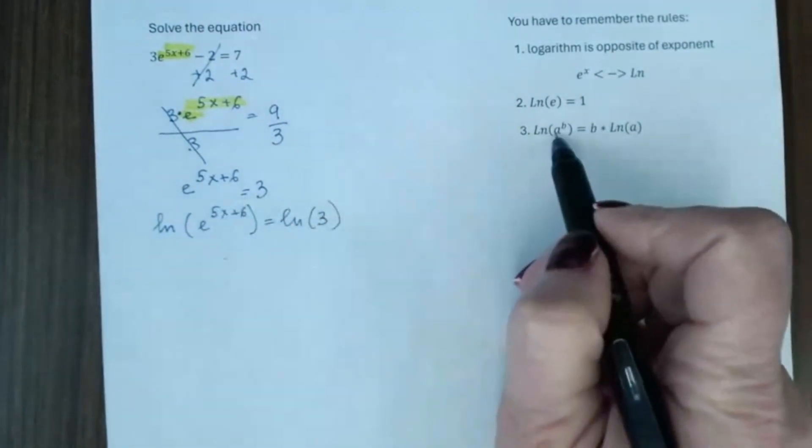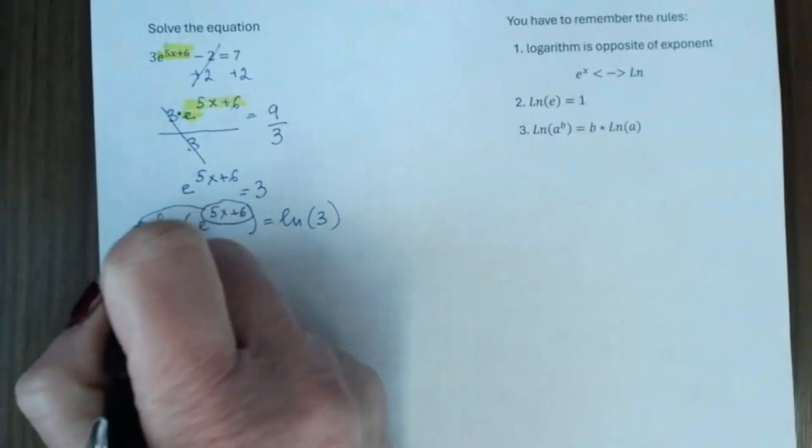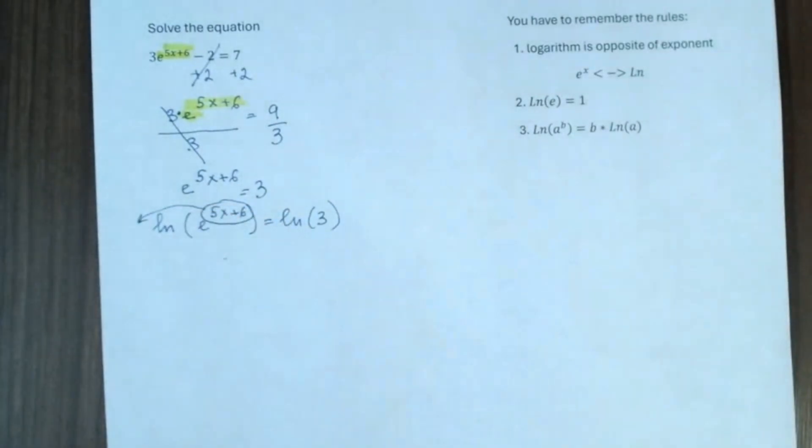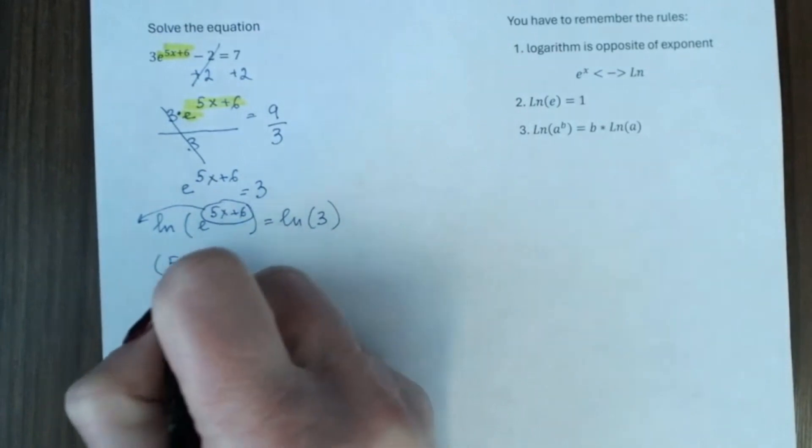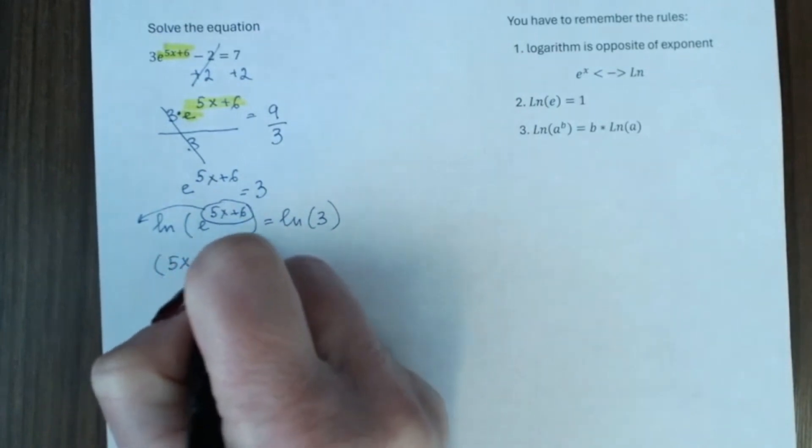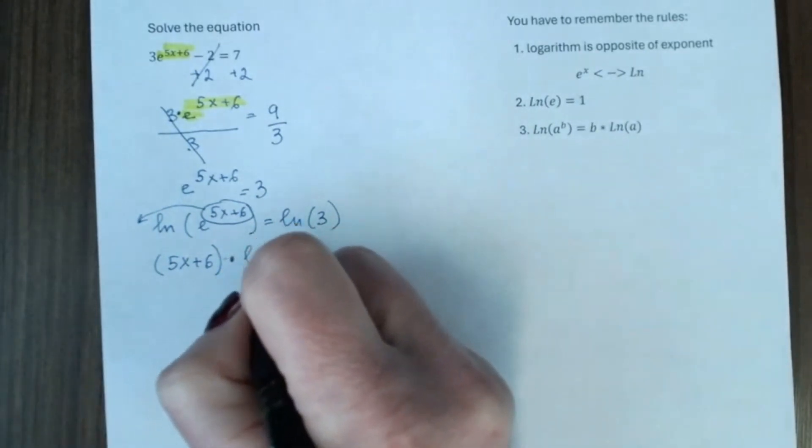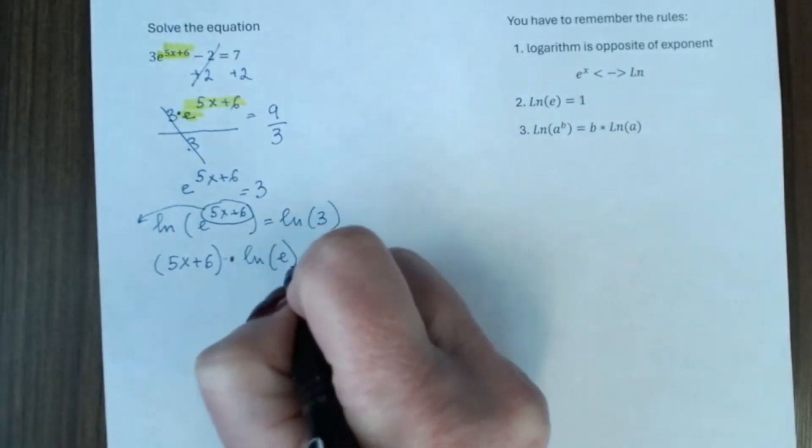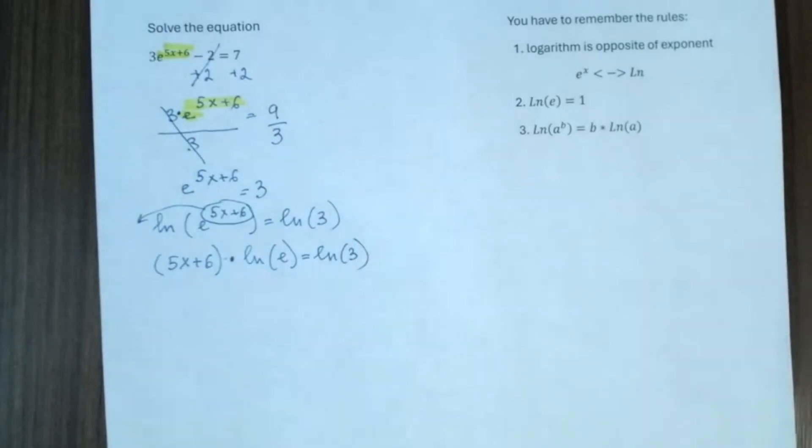Next, we will use the third rule. We will use the exponent in front of the logarithm. It is extremely important if you will write the exponent inside of parenthesis. It's like this times natural logarithm of e is equal to natural logarithm of 3.